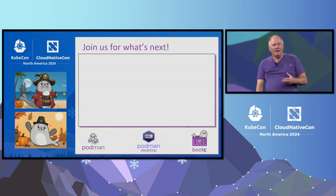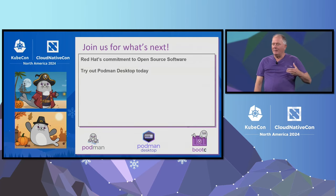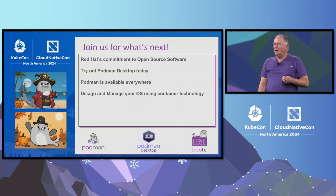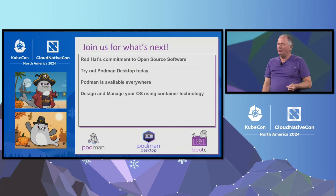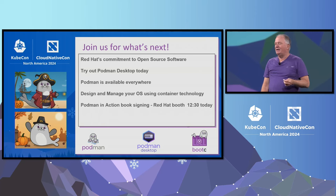This contribution is part of Red Hat's commitment to fully free and open source software. Try out Podman Desktop today like millions of others have. Podman is available on every Linux distribution as well as on Macs and Windows. Use Bootsy and Podman to design and manage your operating system in a cloud-native fashion as an appliance everywhere. At 12:30 today, come to the Red Hat booth and I will be signing and giving away free signed copies of my book, Podman in Action.